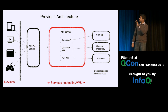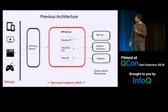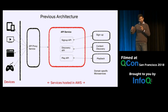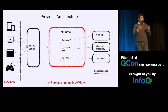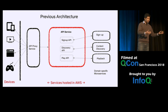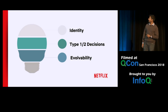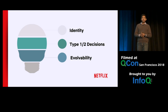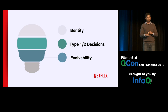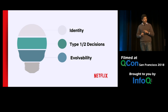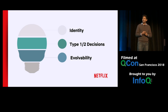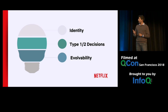Let's keep this architecture in mind as we go through this talk. We'll pick apart the technical aspects of the previous architecture and compare and contrast it with our current architecture choices. At the very high level, we recommend thinking in terms of three fundamental principles: number one, identity; number two, type one and type two decisions; and number three, evolvability.